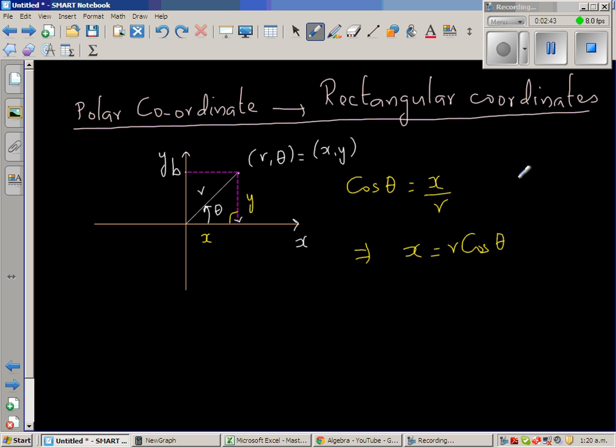And what is sin θ? Let me do it here. So sin θ is opposite over hypotenuse, which is y over r. So if you make y the subject, y is r sin θ.